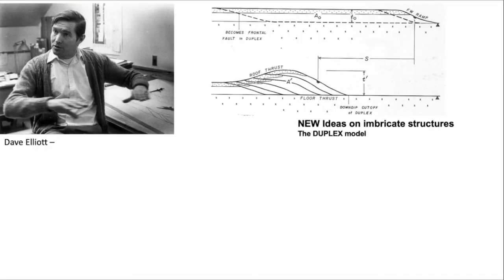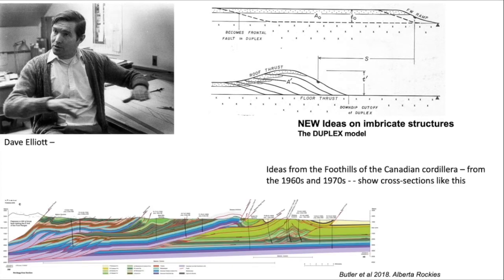In 1980, ideas were published that challenged the Peach model, and that challenge came from Dave Elliott, who had worked extensively on thrust systems in North America — the Canadian Cordillera particularly and in the Appalachians. He took ideas from these regions and applied them to the North West Highlands, as seen in one of his diagrams. Like Peach, he showed what structures looked like before displacement, but unlike Peach, he suggested that thrusts formed in a particular sequence, and that higher thrusts were folded by lower ones as thrusting migrated from right to left through time. These ideas came from cross sections from the Cordillera, showing that higher thrusts are generally folded and bulged by the underlying ones.